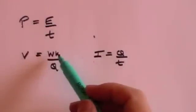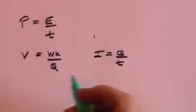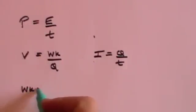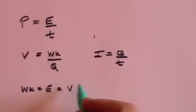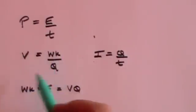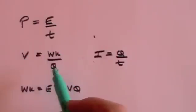Now work, of course, is also energy. It's all measured in joules. So work, which is energy, is V times Q. Just by rearranging this formula, work is V times Q.